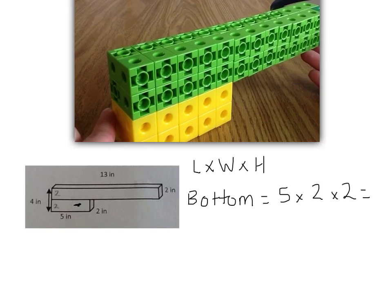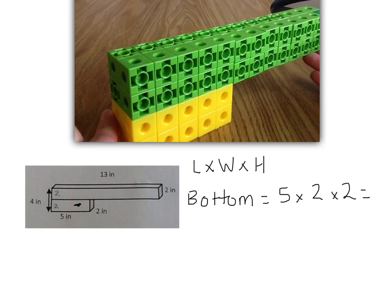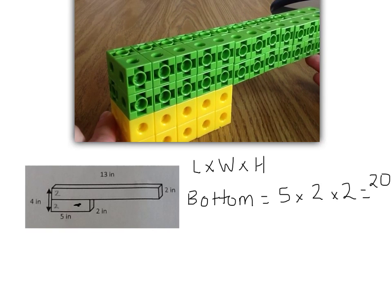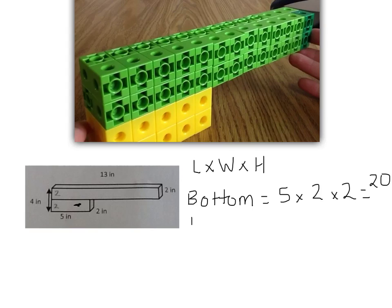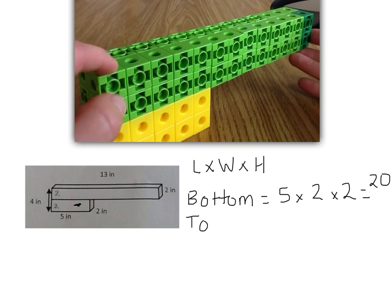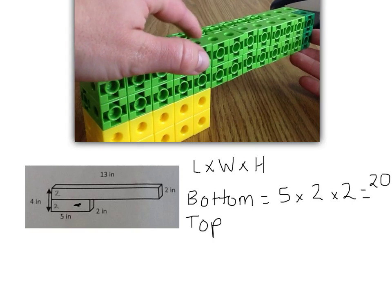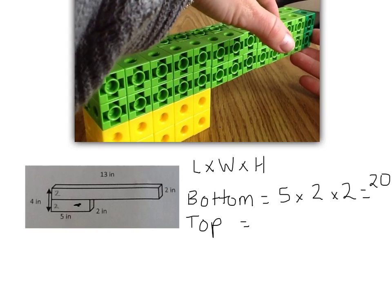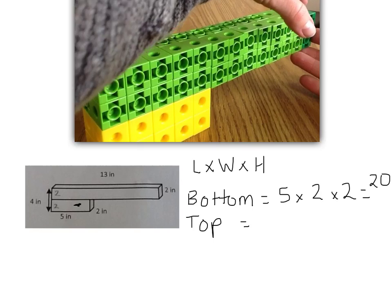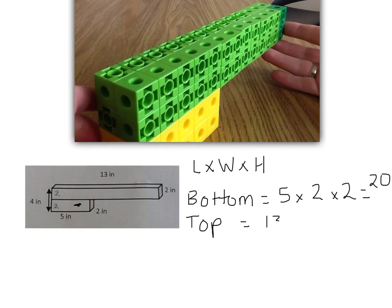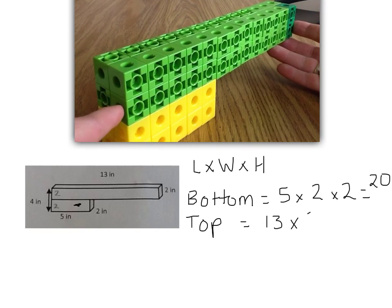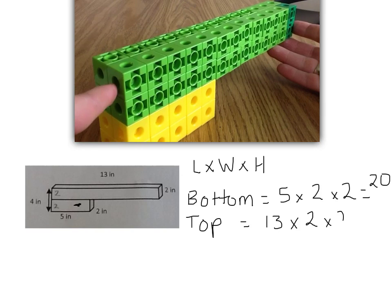Then I look at the green. Again, I'm going to look for the length, the width, and the height. If I were to count the green, I get 13 as my length. My width, going back, is still 2, and my height is 2.